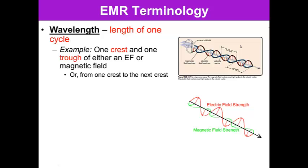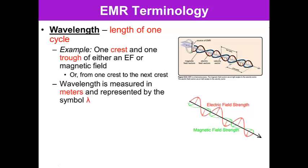Or you can measure it from one crest to the next, so from here to here is a wavelength, from here to here is a wavelength. A wavelength is measured in meters and represented by the symbol lambda, so that funny upside down Y is called lambda.